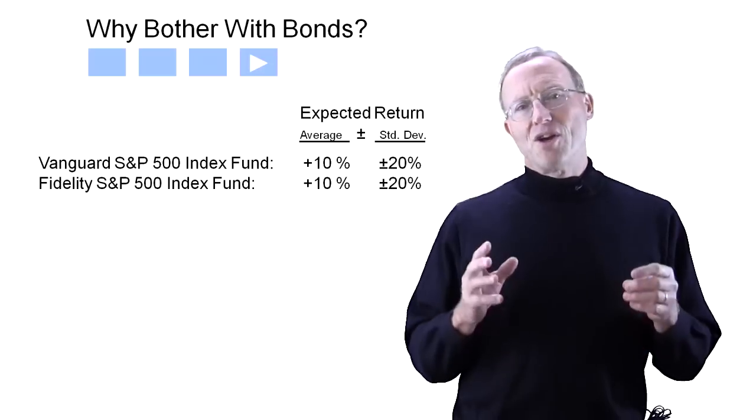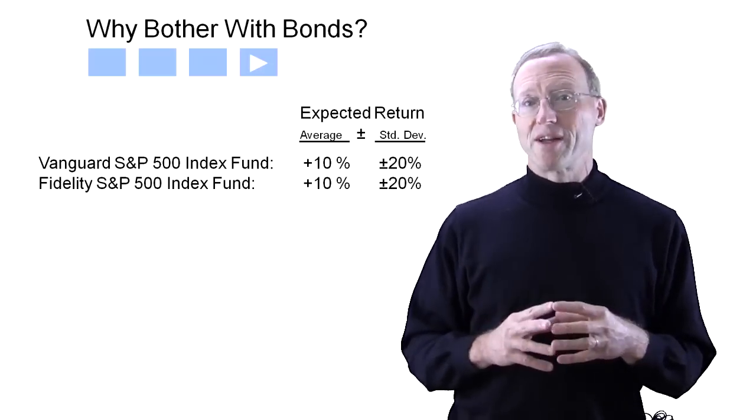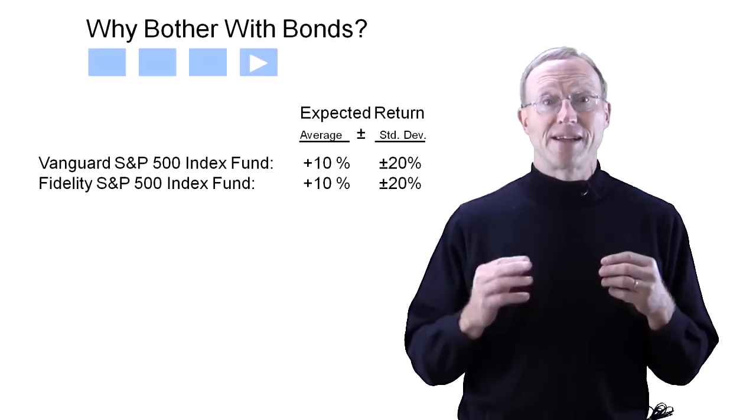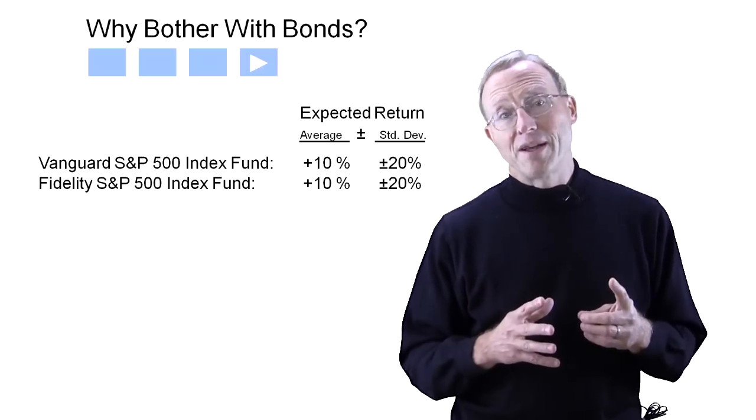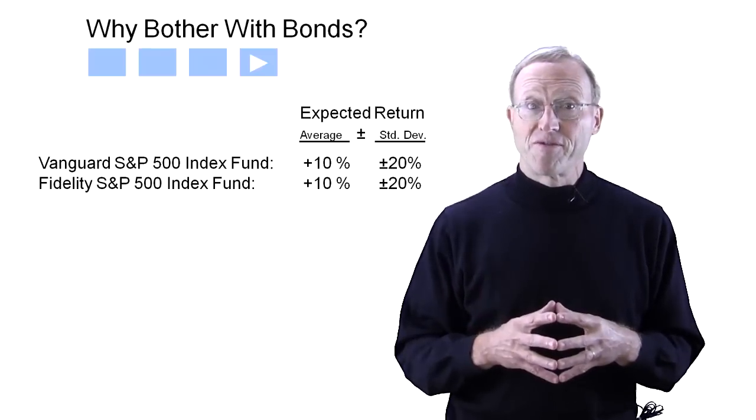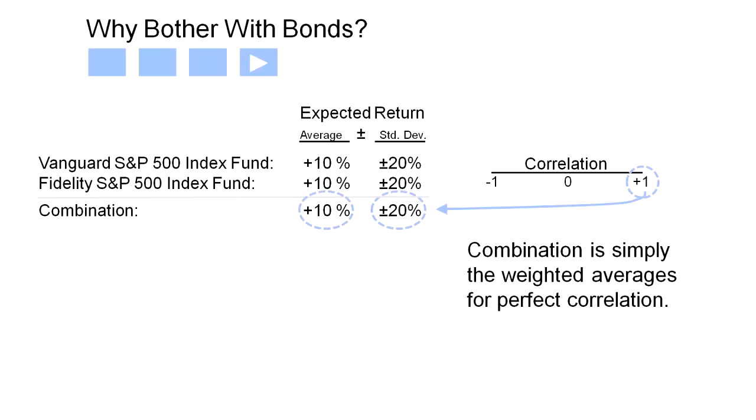Now let's put it together. To illustrate two perfectly correlated funds, let's combine the S&P 500 fund from one company with the S&P 500 fund from another. Presumably they are perfectly correlated and the combination is a weighted average.